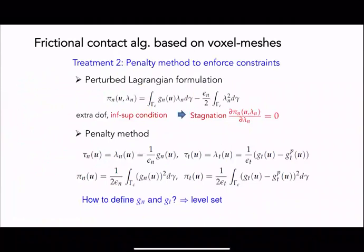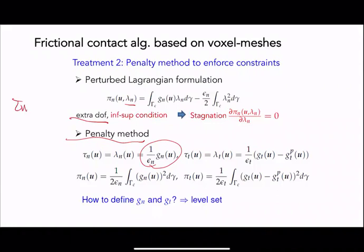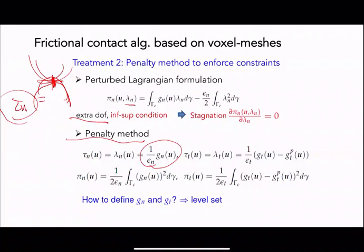To prevent interpenetration, instead of using extra degrees of freedom, we use a simple penalty method that penalizes the interpenetration of the gap functions. Tractions are generated whenever there is a slight overlap indicated by the indicator functions, which detect potential contact. This part is applicable not just to the voxel mesh contact mechanics but to general mechanics problems that prevent interpenetration.